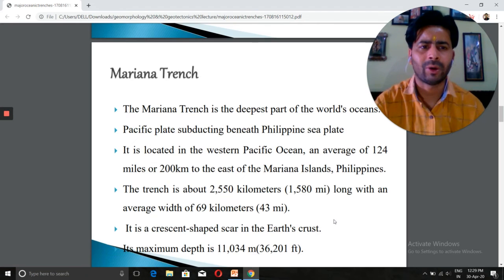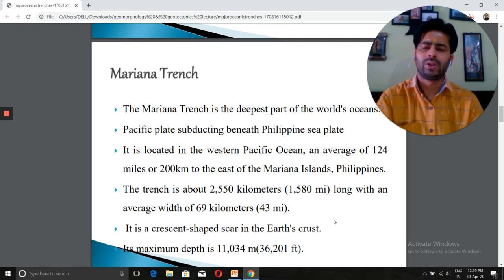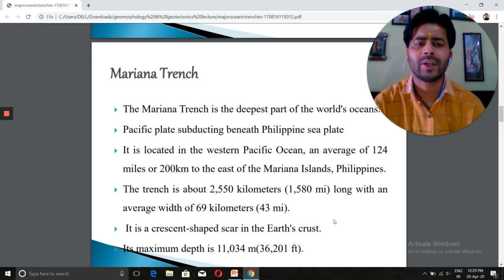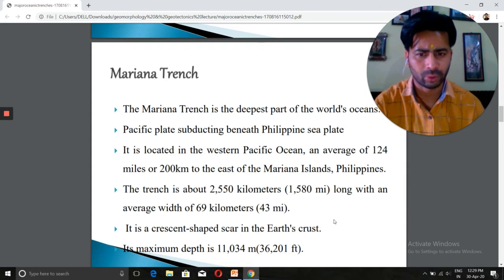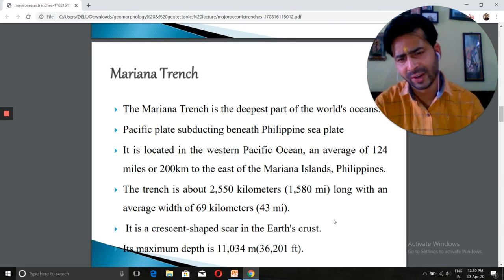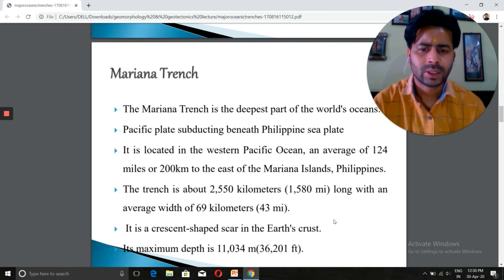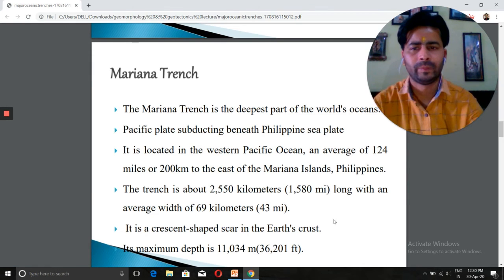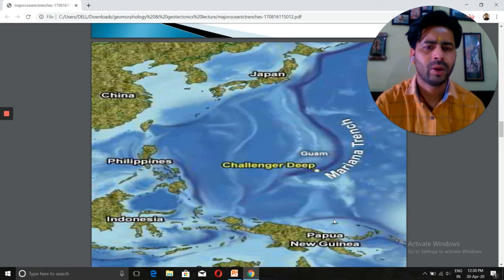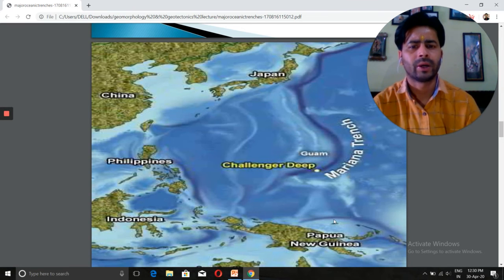The Mariana Trench is the deepest part of the world's oceans where the Pacific plate subducts beneath the Philippine Sea plate. It is located in the western Pacific Ocean, an average of 124 miles or 200 kilometers to the east of the Mariana Islands, Philippines. The trench is about 2,550 kilometers long with an average width of 69 kilometers. It is a crescent-shaped scar in the earth's crust with a maximum depth of 11,034 meters. That is the diagram showing the Mariana Trench, which is also part of the Challenger Deep.